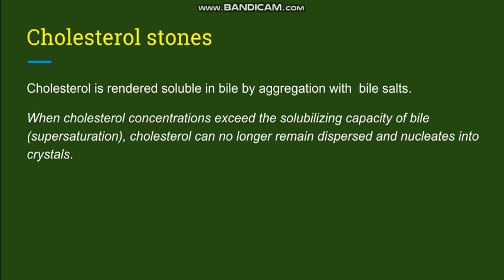Normally, cholesterol is rendered soluble in the bile with the help of bile salts. Whenever cholesterol is increased in the bile and its concentration exceeds the quantity of bile salts, it exceeds the solubilizing capacity of the bile — meaning the bile is supersaturated with cholesterol. Whenever supersaturation takes place, there is crystallization.